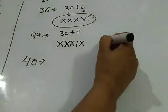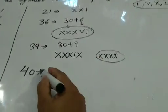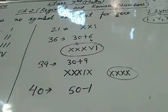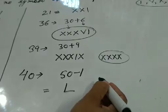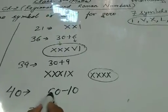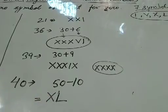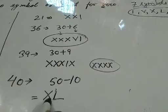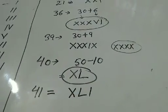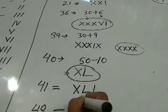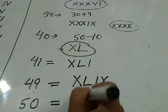Now 40 के लिए — आप 4 time X नहीं लिख सकते, यह wrong होगा क्योंकि हम Roman numerals को 3 times ही repeat करते हैं. अब 40 के लिए: 40 को लिखेंगे 50 minus 10. 50 के लिए symbol है L, और minus कर रहे हो तो X को left side में लिखोगे. So 40 is XL. अब 41 लिखना है: XL plus I — that is XLI. 49 लिखना है: 40 is XL, and 9 is IX — so 49 is XLIX.